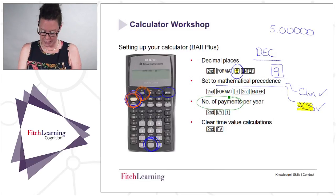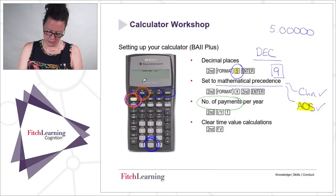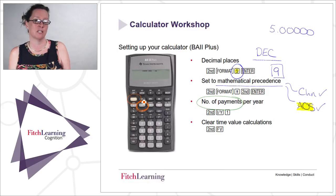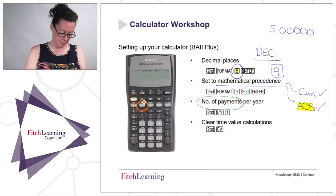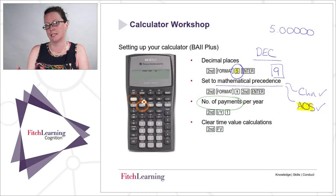Go into second, then the IY button — which represents interest payments per year. My calculator is already set up to one. If it's reading anything else, just put one and enter, and it will be set for you.